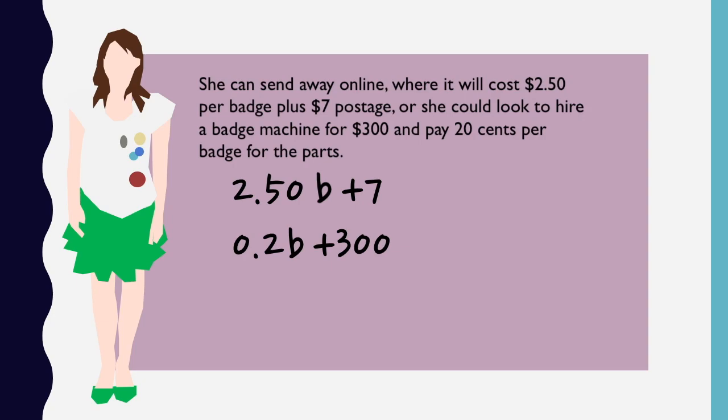However, we might want to keep the cost variables separate. So we'll say p is the cost of using post, and h is the cost of hiring. Now for one badge, clearly it will be better to use postage. But if we get a thousand badges, it'll probably be better to use the machine hire, since it's so much less per badge.